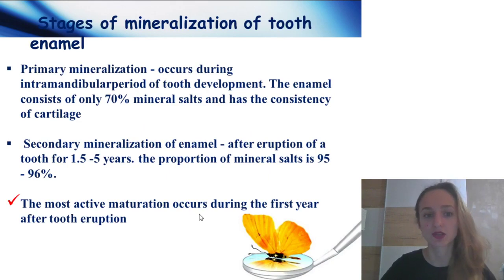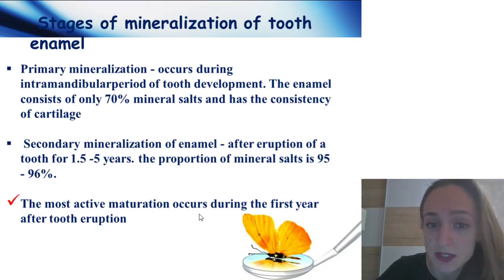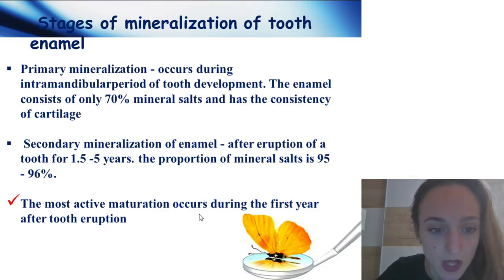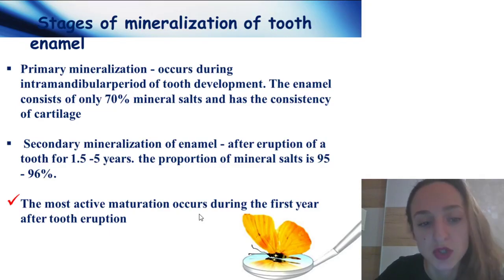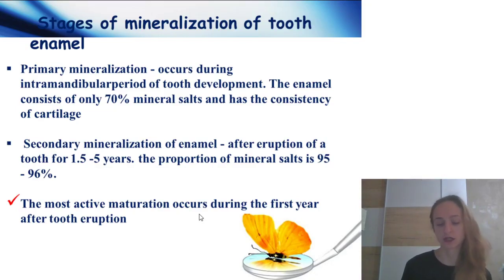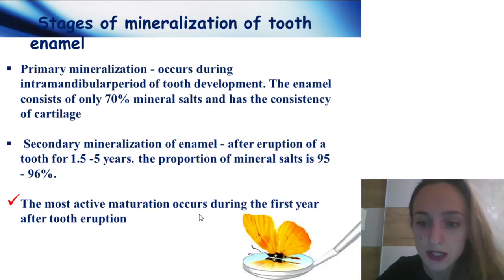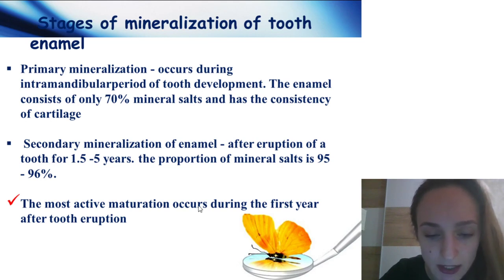Stages of mineralization of the tooth: primary mineralization occurs during the intramandibular period of tooth development. The enamel consists of only 70% mineral salts and has the consistency of cartilage. Secondary mineralization of enamel occurs after eruption of the tooth during 1.5 to 5 years. The proportion of mineral salts is 95–96%. The most active maturation occurs during the first year after tooth eruption.